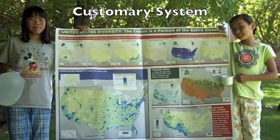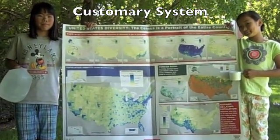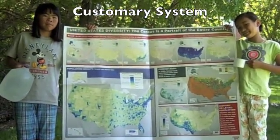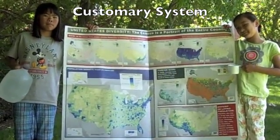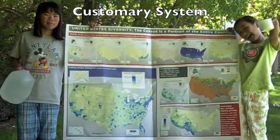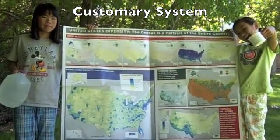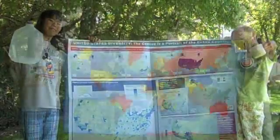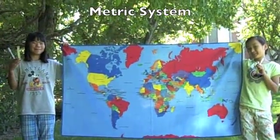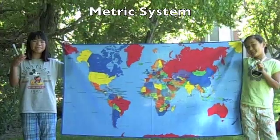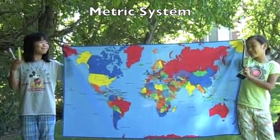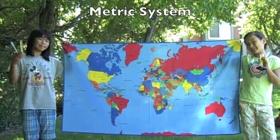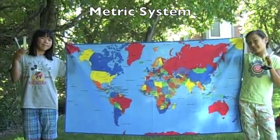Here in the United States, we measure capacity with customary units like teaspoons, cups, pints, quarts, and gallons. However, scientists and most other places in the world use metric units of capacity like the liter and milliliter.